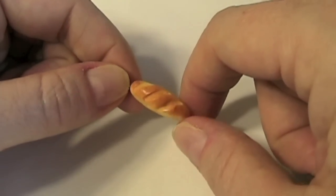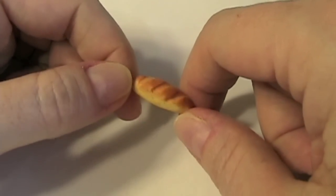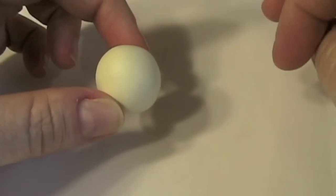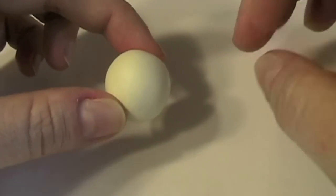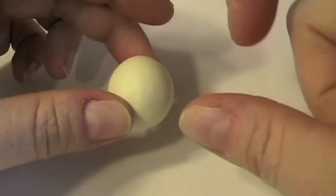In this video you will learn how to sculpt my French baguette polymer clay charm. All you need is an off-white color. This I mixed translucent with white and just a touch of yellow.